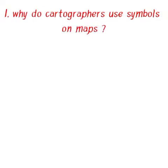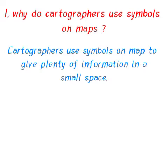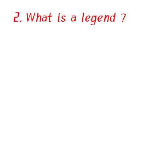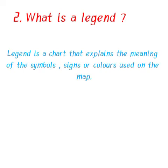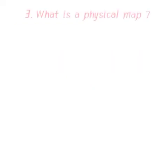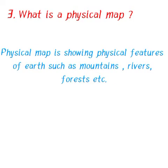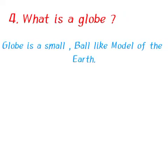Answer the following questions: Why do cartographers use symbols on maps? Cartographers use symbols on maps to give plenty of information in a small space. What is a legend? A legend is a chart that explains the meaning of symbols, signs, or colors used on a map. What is a physical map? A physical map shows the physical features of the earth such as mountains, rivers, and forests. What is a globe? A globe is a small ball-like model of the earth.